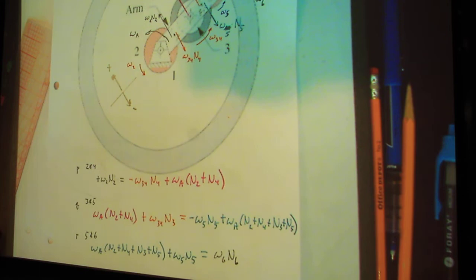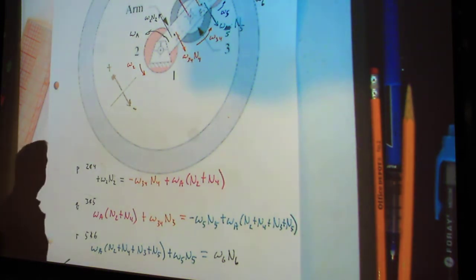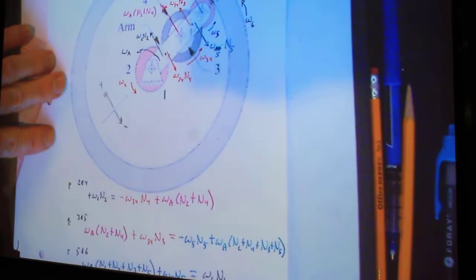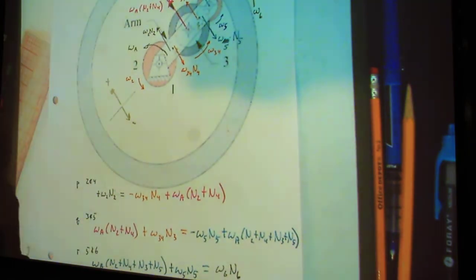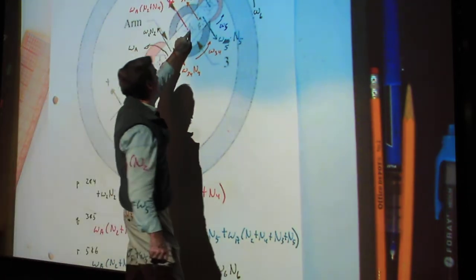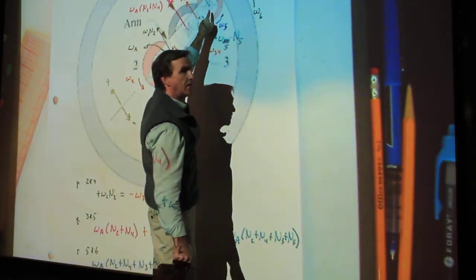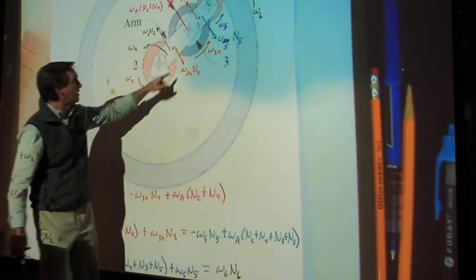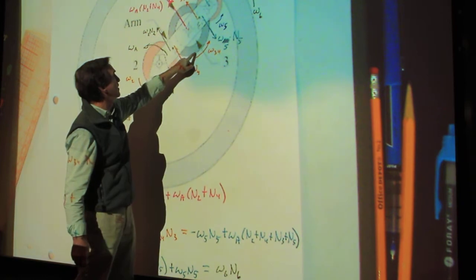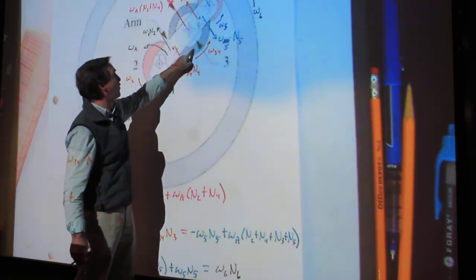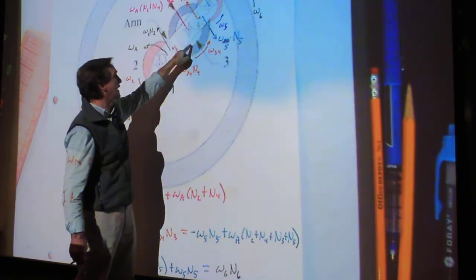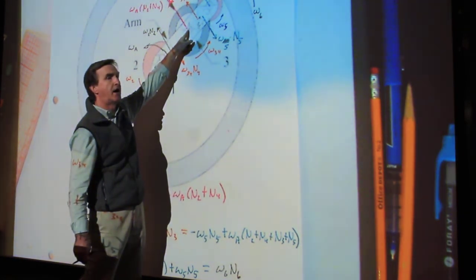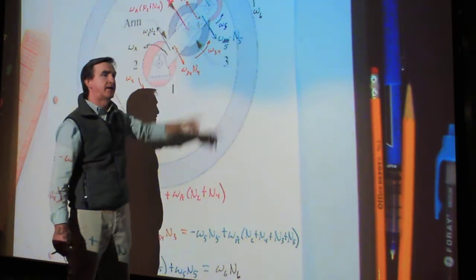Can you explain again how to add the arm contribution? The arm? So on the arm, the arm is carrying the center of these gears. And so that is why when I look at either gear 3 or 4, whenever I add that component, I have to account for the arm carrying that center.